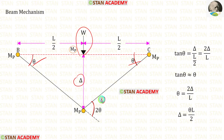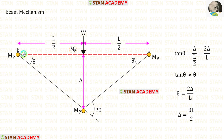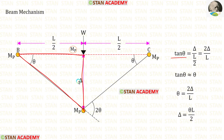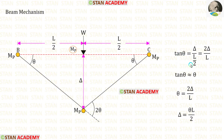So this angle will be θ + θ, giving 2θ. Let us take this triangle. In this triangle tan θ = δ / (L/2). We can take L/2 inversely and multiply with δ.